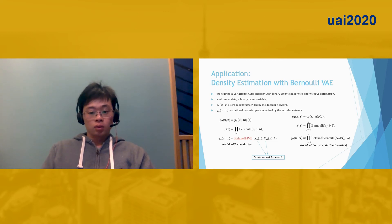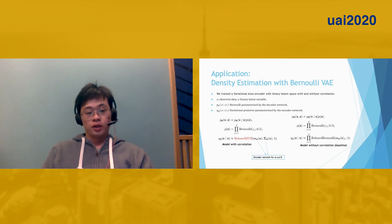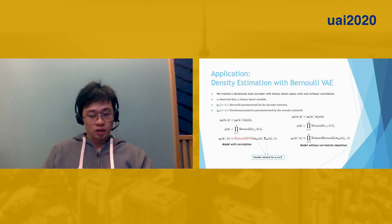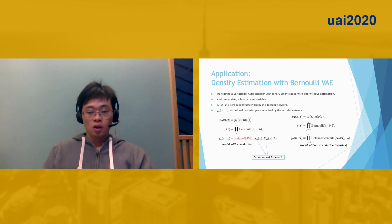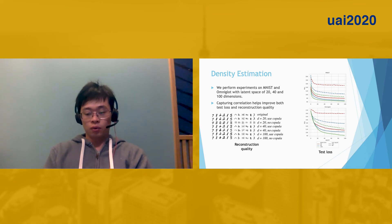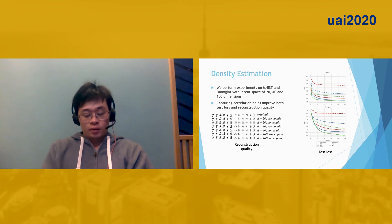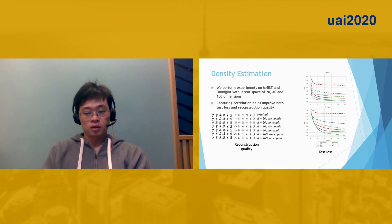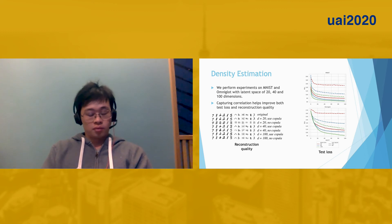To demonstrate the effectiveness of our model, we train a VAE with binary latent space to perform a density estimation task. We train two models: one uses Relax-Multivariate Bernoulli as the variational posterior, which takes correlation into account, and the other uses a fully factorized Relax-Bernoulli as the variational posterior, which serves as the baseline. Our experiments are performed on MNIST and Omniglot with latent space of 20, 40, and 100 dimensions. As we can see, the model that takes correlation into account performs better than the baseline in both reconstruction quality and test loss, confirming that modeling correlation does help improve overall performance.